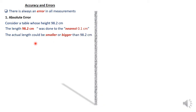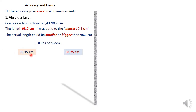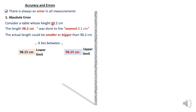We should also say that the actual length could be smaller or even bigger than this. It could lie between 98.15 centimeters and 98.25 centimeters. The value 98.15 rounded off to one decimal place gives 98.2, and any number below 98.25 rounded off similarly gives the same result. So 98.15 is the lower limit and 98.25 is the upper limit.